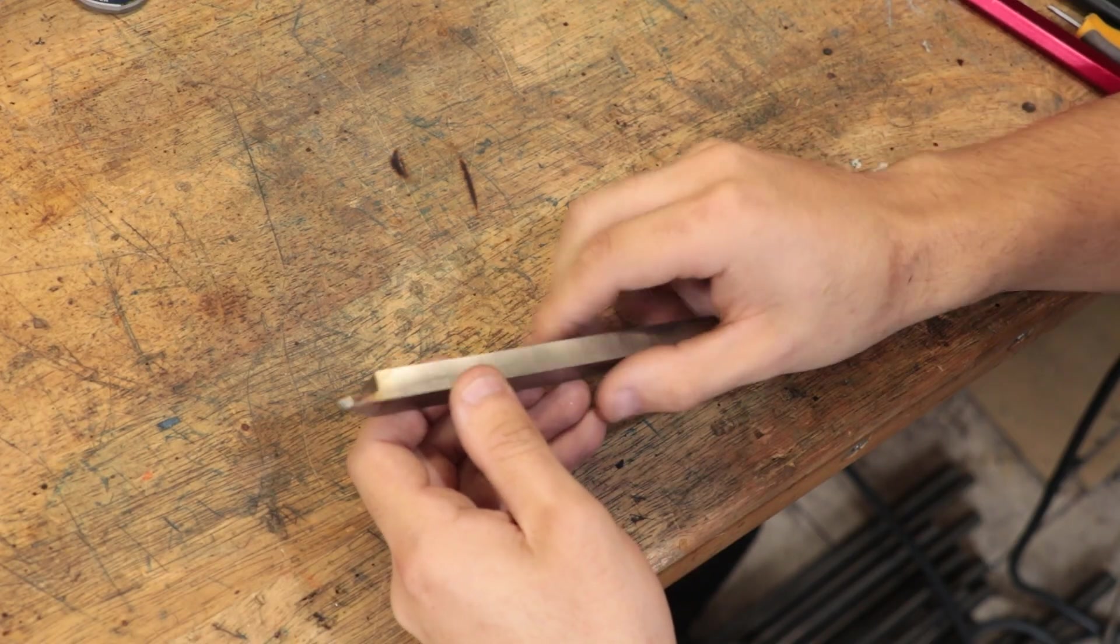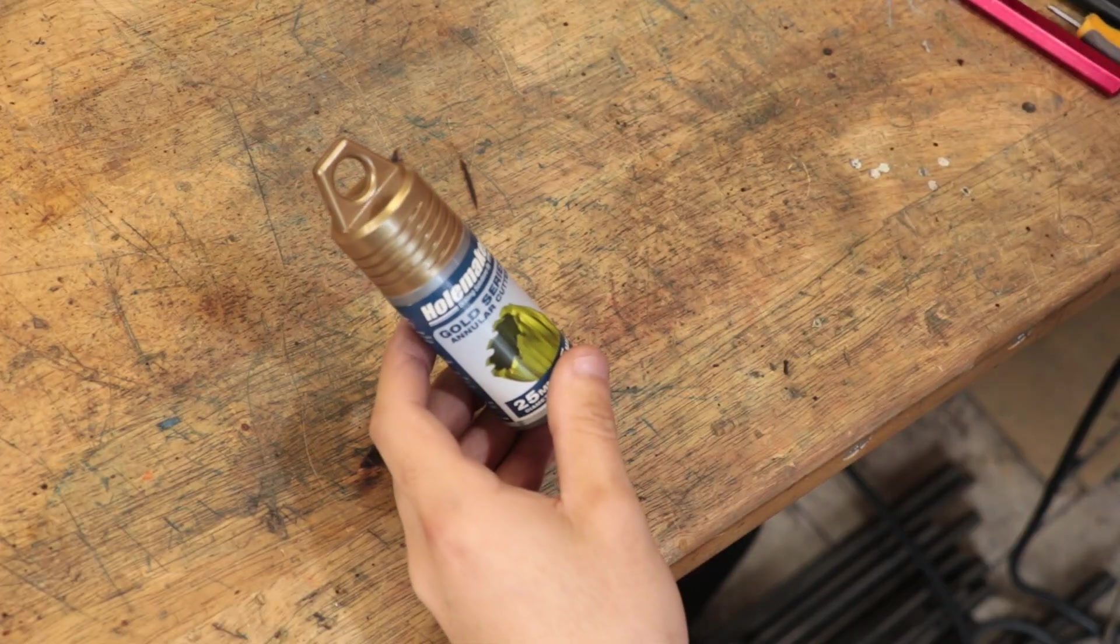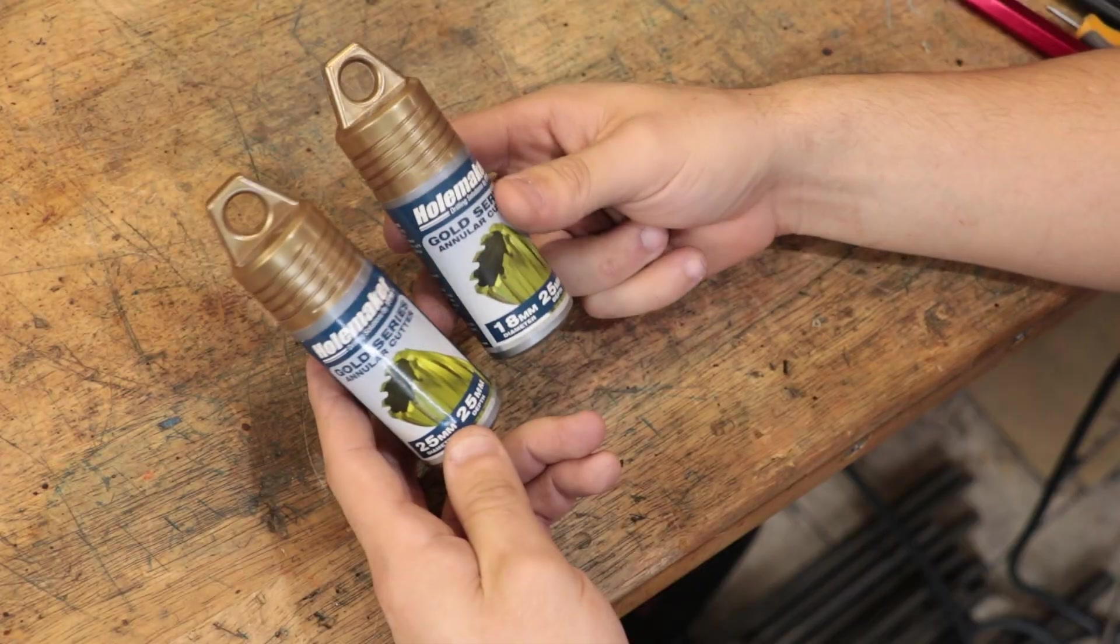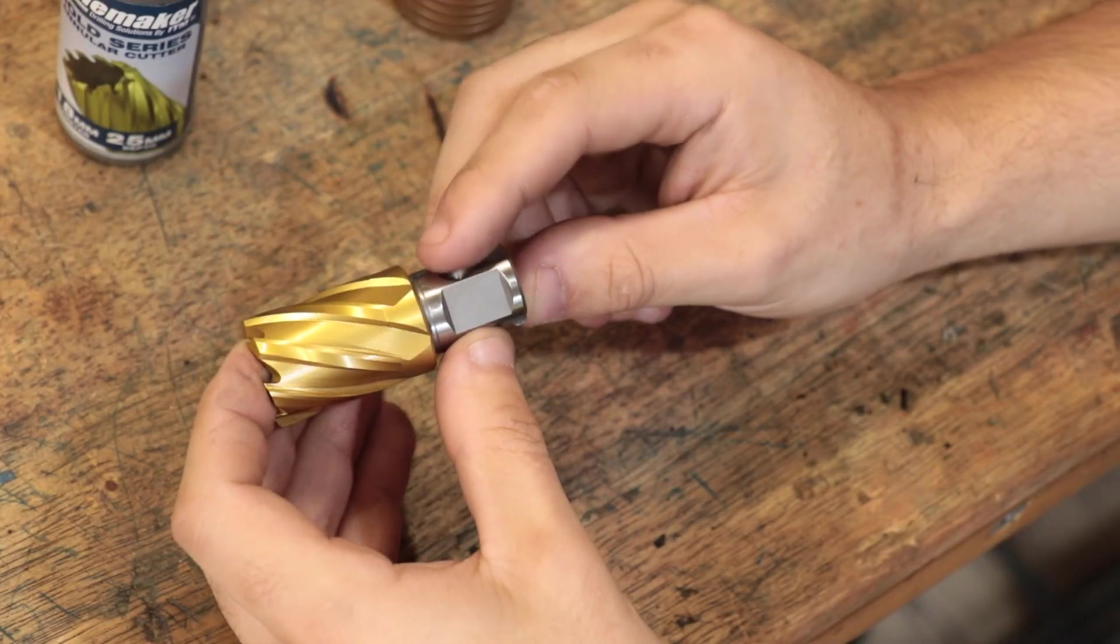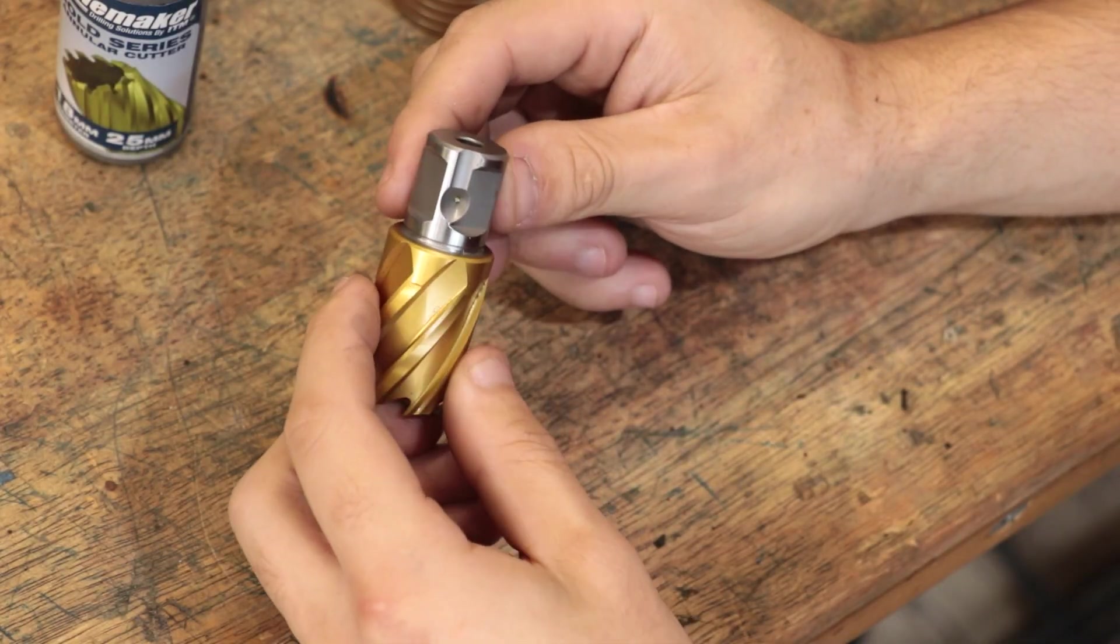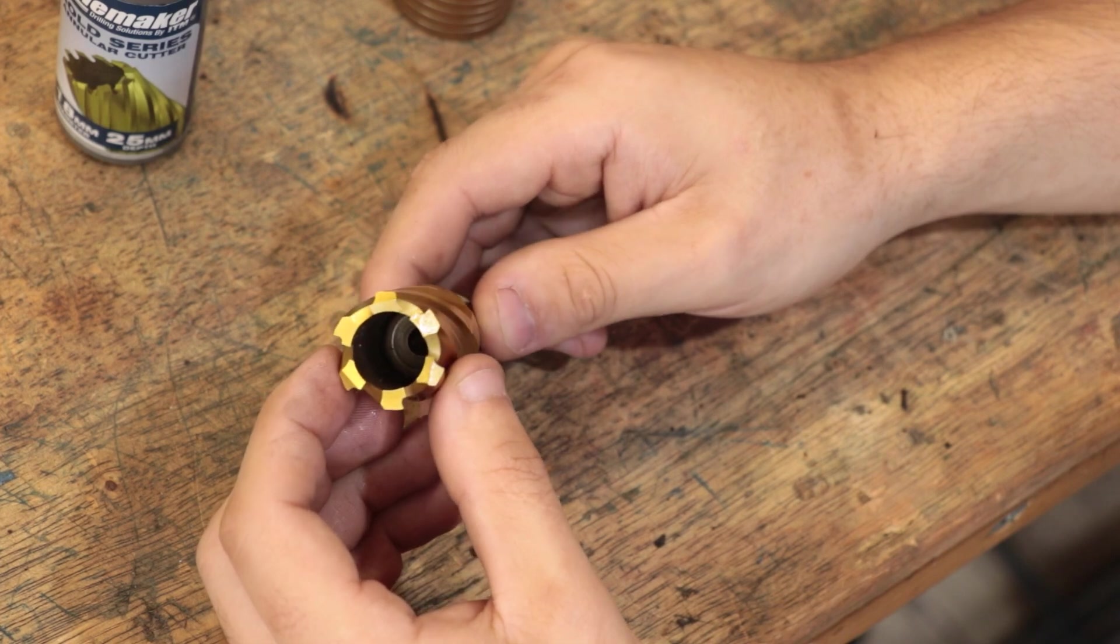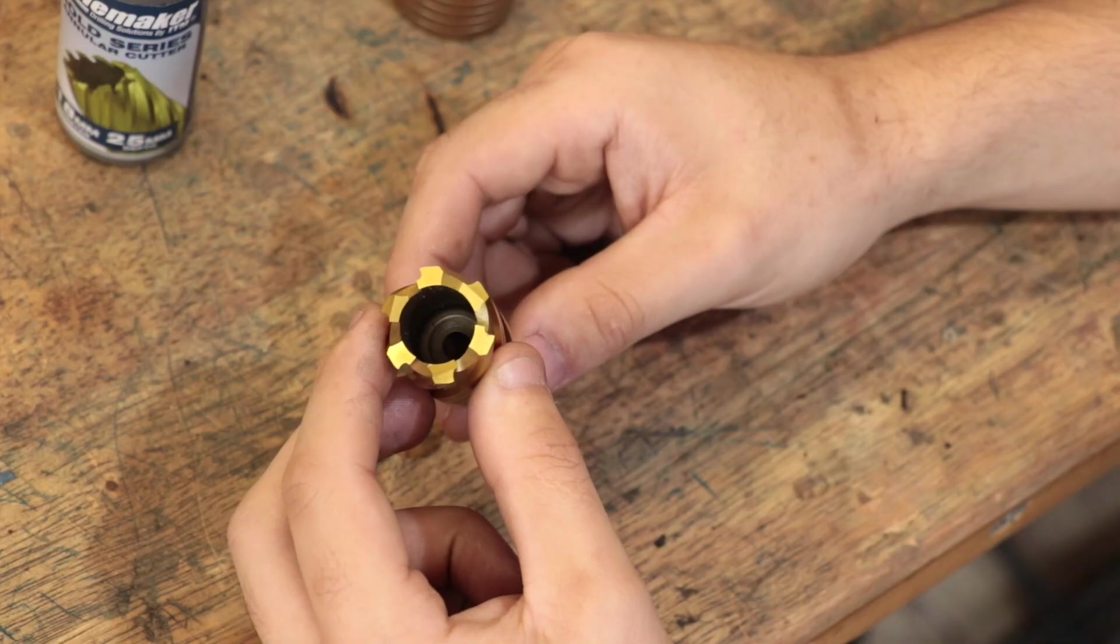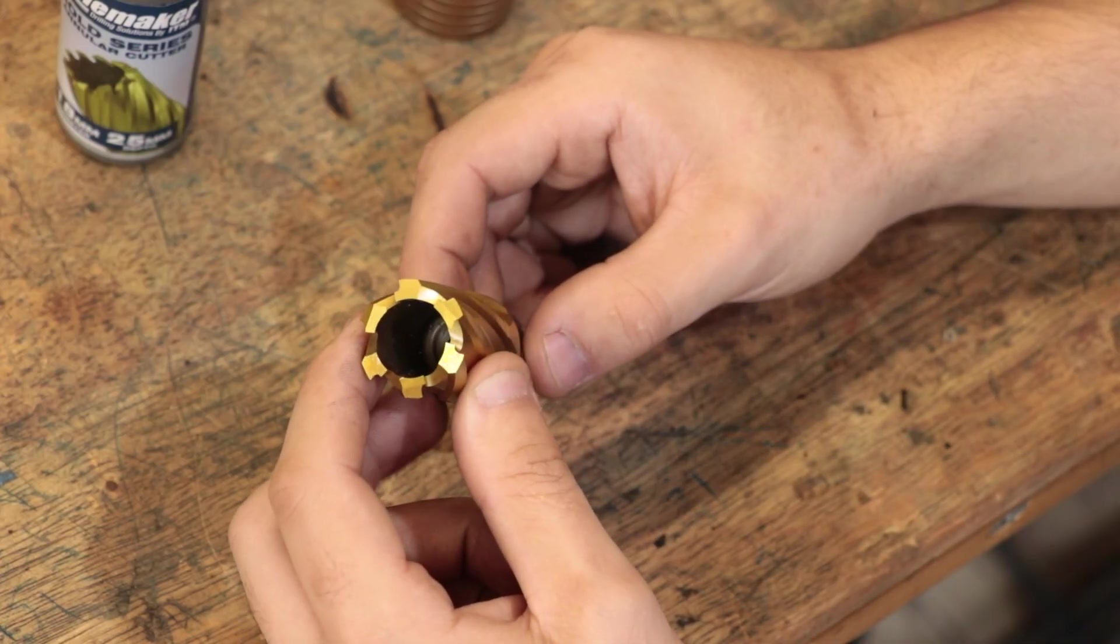Now I was going to leave it there, but then I remembered being recommended annular cutters a while back and supposedly they are like hole saws but made from metal and they perform a lot better. And unlike most hole saws, they are made of proper high speed steel. Now I have seen them used before, but I haven't personally used them, but fingers crossed I hope these work because these ones here weren't cheap. These ones here were about $140 in total, so I do hope that they work.